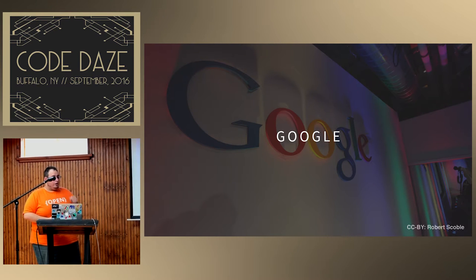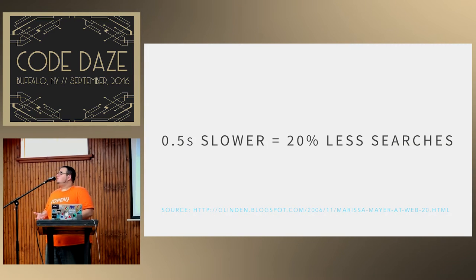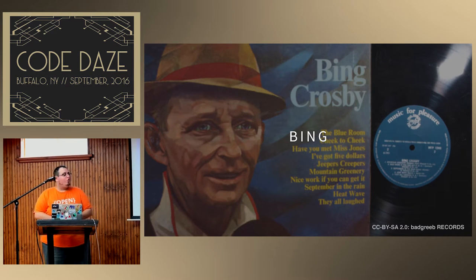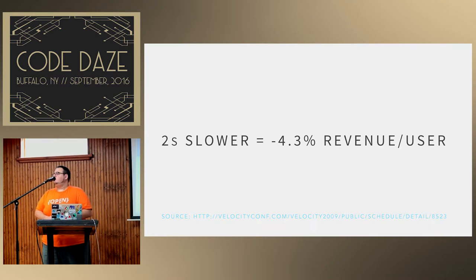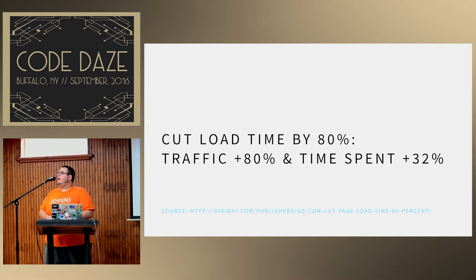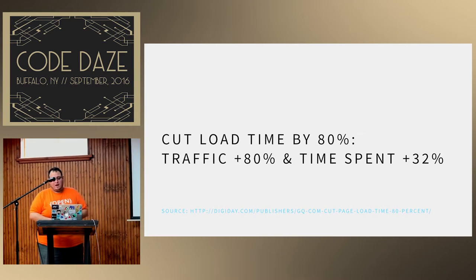Google found that if they were half a second slower, they got 20% fewer searches. Bing, when they were two seconds slower, got 4.3% less revenue per user. GQ, a popular magazine, found that when they cut load time by 80%, traffic went up by 80% and time spent on the site went up by 32%.